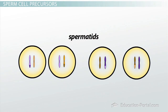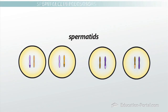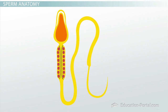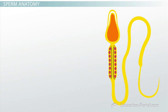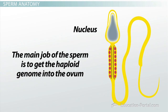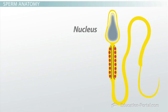These spermatids now have the correct number of chromosomes to be functional gametes, but they don't have the physical characteristics of sperm that allow them to swim to the ovum and fertilize it. A functional sperm looks a lot like a tadpole, but sperm have only three basic components. The nucleus contains the haploid genome and not much else. The main job of the sperm is to get the haploid genome into the ovum, which will provide the other half of the genome along with pretty much all of the cytosol, cell membrane, and cellular organelles.